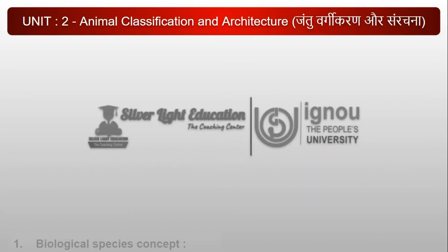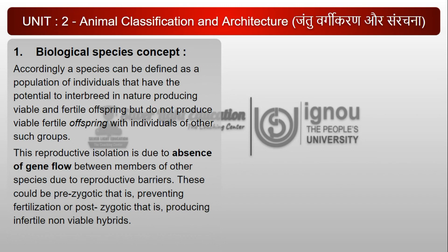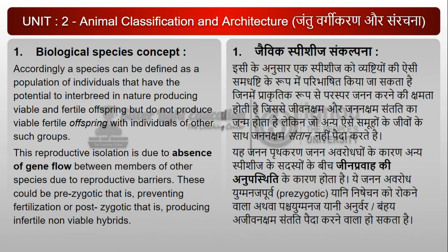Accordingly, a species can be defined as a population of individuals that have the potential to interbreed in nature, producing viable and fertile offspring, but do not produce viable fertile offspring with individuals of other such groups. This reproductive isolation is due to absence of gene flow between members of other species due to reproductive barriers. These could be pre-zygotic, that is preventing fertilization, or post-zygotic, that is producing infertile non-viable hybrids.